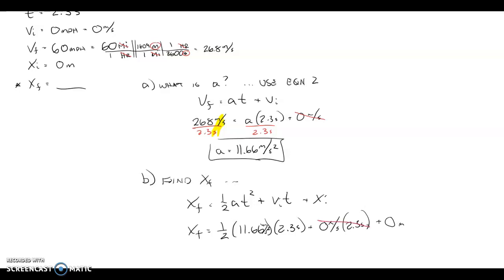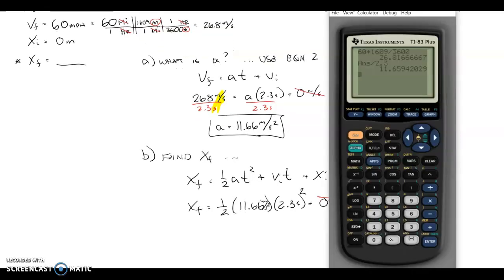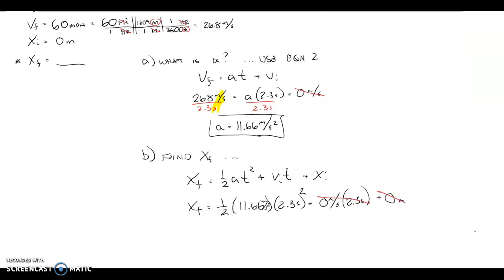When I start at rest, that goes away. And when I start at 0, that goes away. So I really just have this other part. And don't forget your square in here. In my calculator, I can evaluate 1 half is 0.5 times the answer I just got, 11.65, times 2.3 squared, and I get a final position of 30.8 meters.